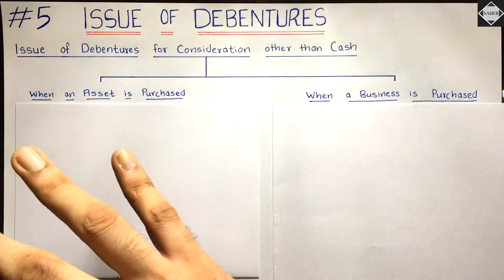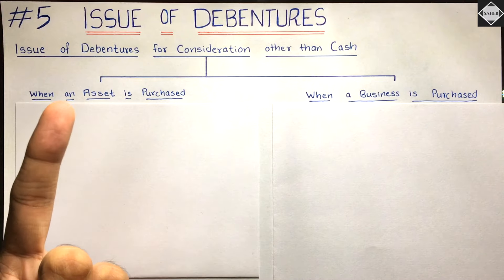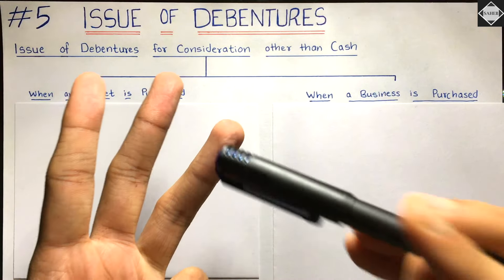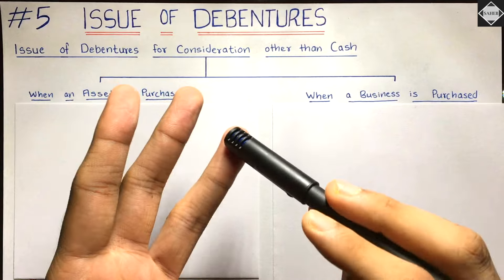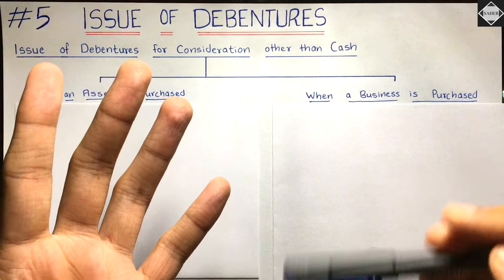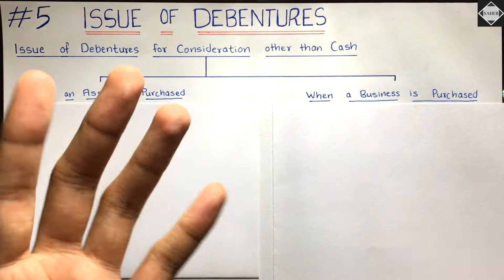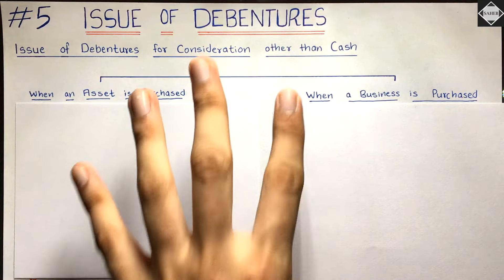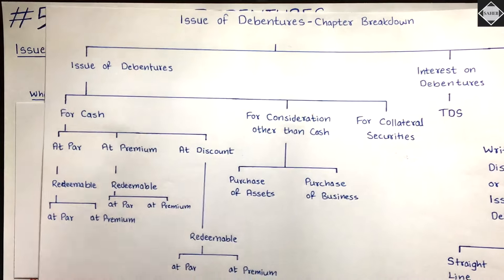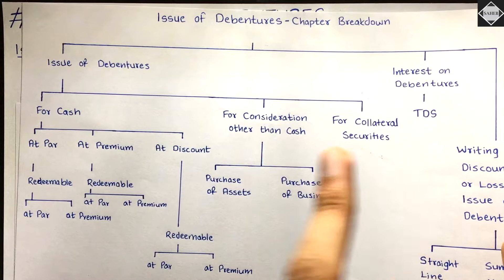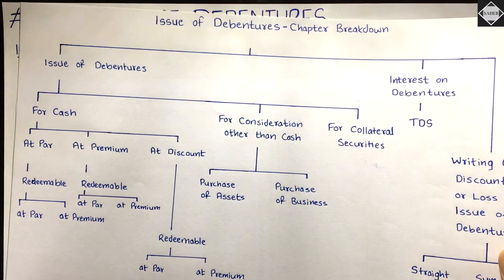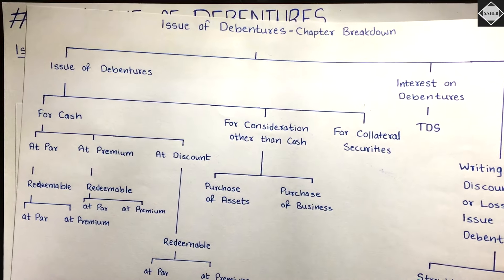Before going ahead, please make sure you have watched the previous four videos of this chapter. In the first video we discussed the entire concept; in the second we solved six problems on issue of debentures for cash; in the third video we covered over-subscription with three more problems. In the fourth video we discussed collateral security. This fifth video covers issue of debentures for consideration other than cash.